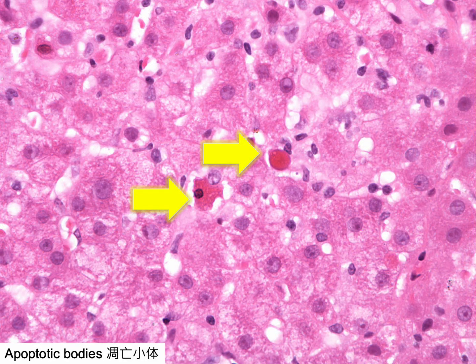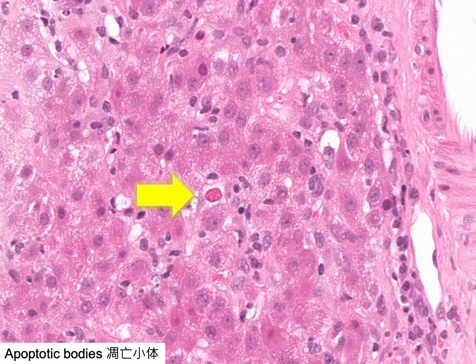An apoptotic hepatocyte exhibits a pyknotic nucleus and a shrunken, angular, hypereosinophilic cytoplasm. An apoptotic body, previously known as an acidophilic or Councilman body, is a small, mummified, rounded remnant of an apoptotic hepatocyte.